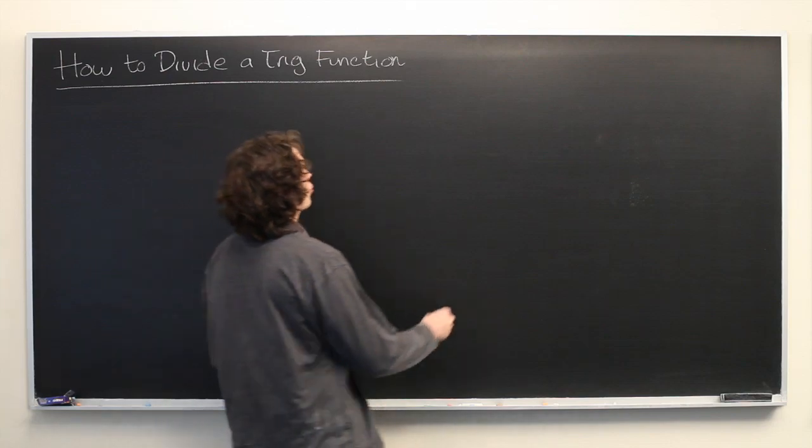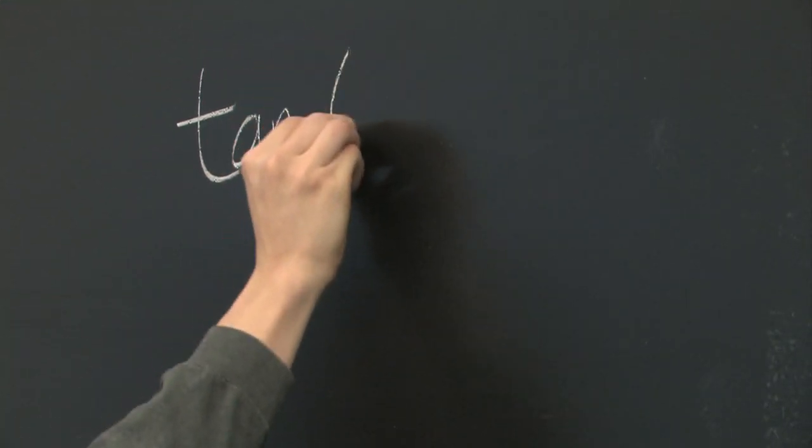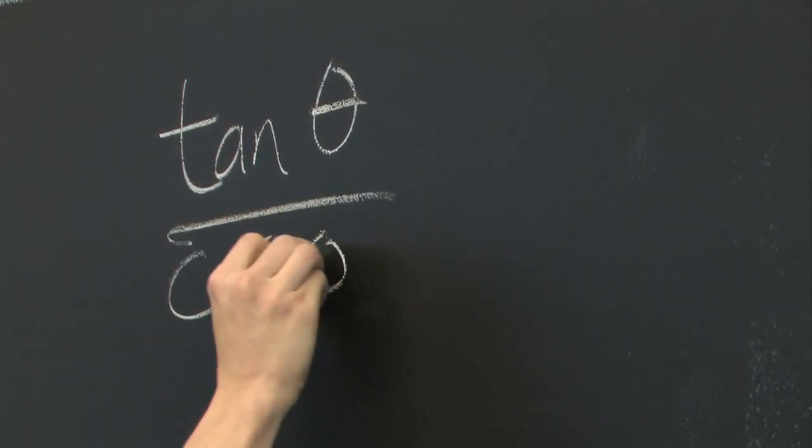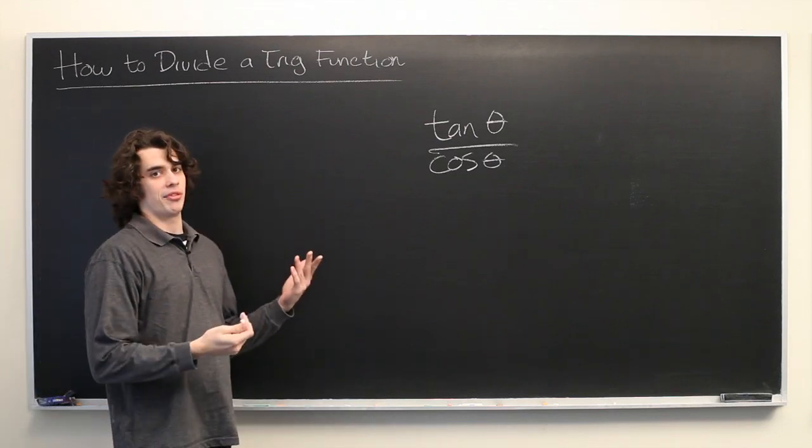Suppose that we are given some expression like tangent of theta over cosine of theta, and we want to try to figure out how to write this in a number of different forms.